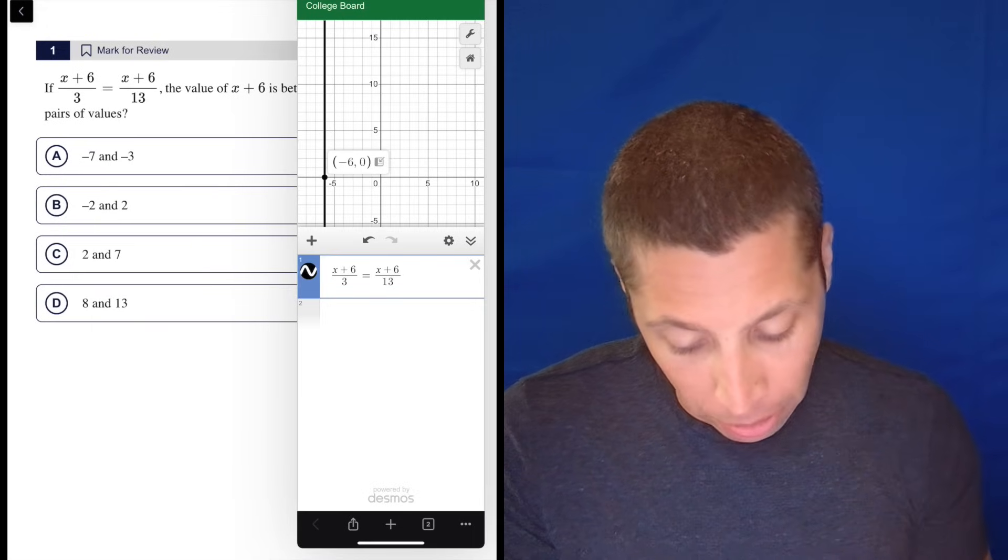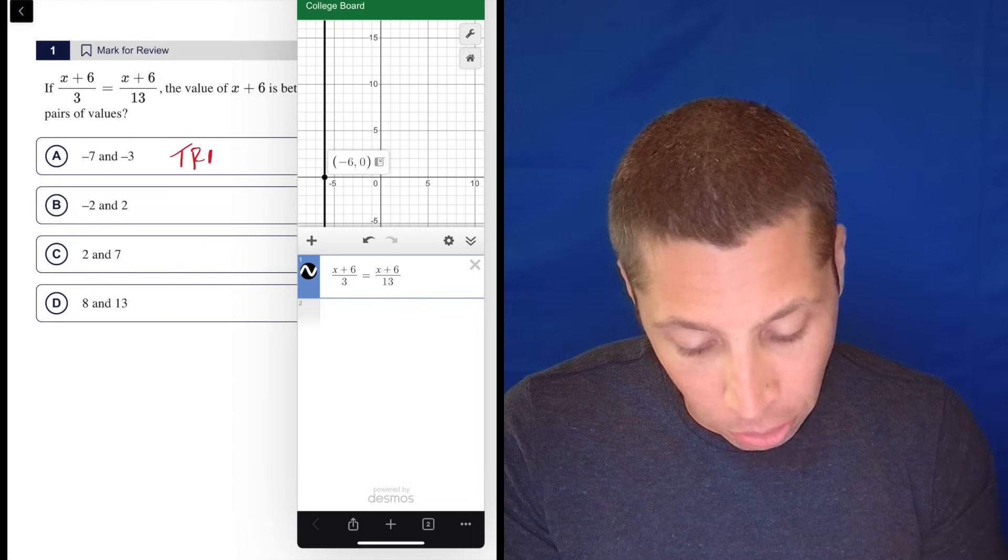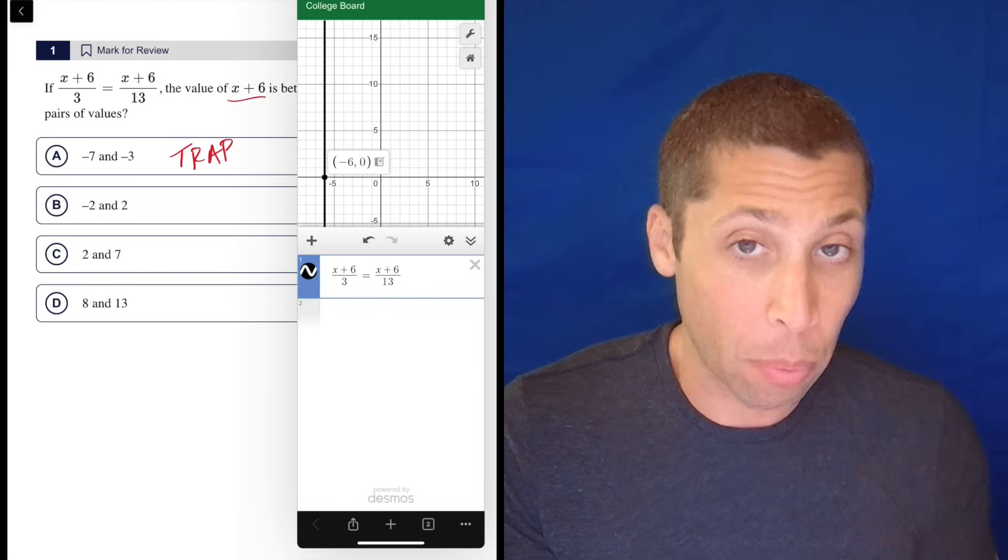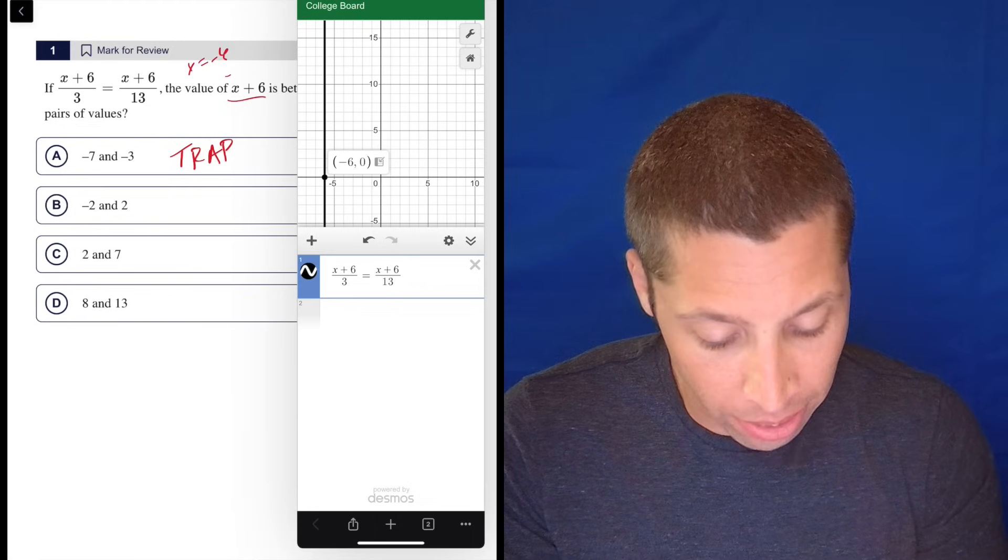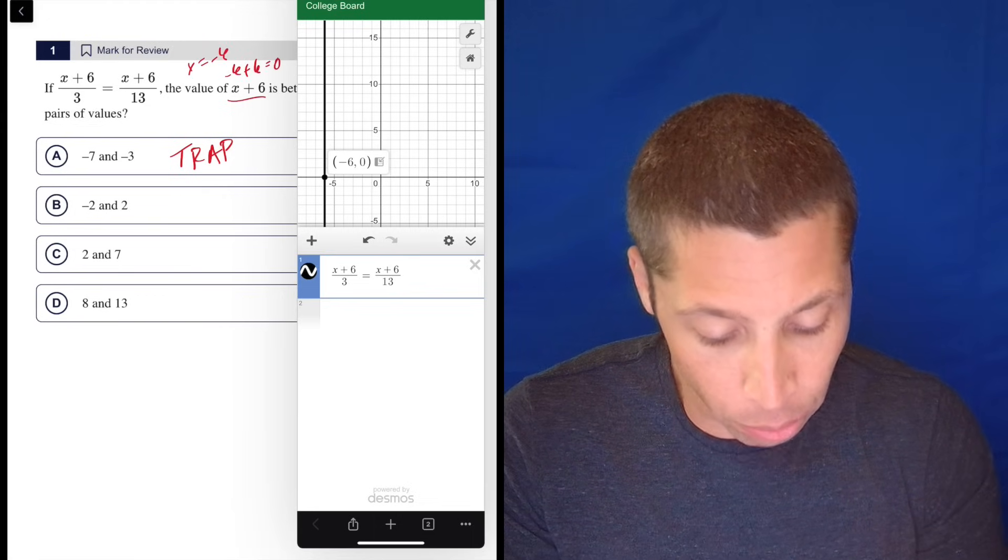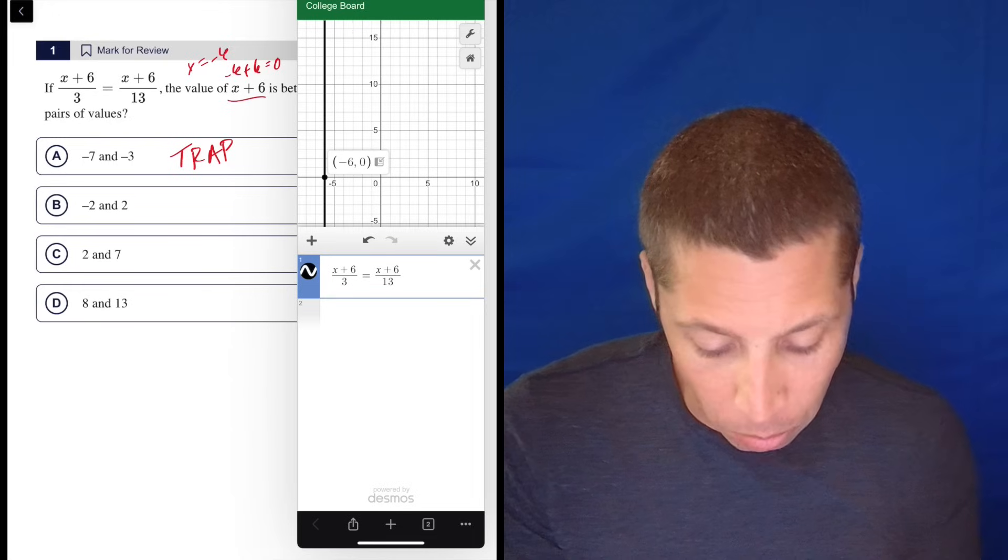So some people are going to pick A because of that, they're going to fall right into the trap of just not reading that we want X plus six. So if X equals negative six, negative six plus six is zero. So zero is between negative two and two.